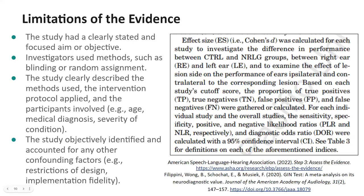Your job as a scientist is to think critically about this next section. Did the study have a clearly stated and focused aim or objective? How well was the study designed? Did the study clearly describe the methods, including the intervention protocol and relevant characteristics of the population? Did the investigators use blinding or random assignment? Did the study objectively identify and account for other confounding factors, such as those from the restrictions of the study design? Overall, critique their methods and stay tuned to identify any possible flaws and consider how the study could be improved.